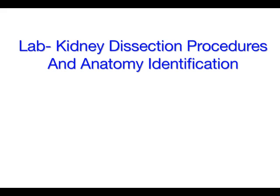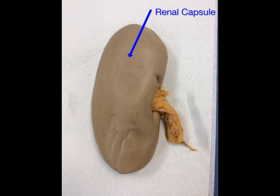In this lab, you'll be dissecting the kidney and making external and internal observations of anatomical structures. The first external structure you have to identify is the renal capsule, which is the outer covering of the kidney.